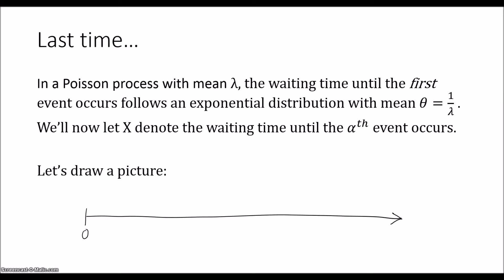Now we'll let X denote the waiting time until the αth event occurs. So let's draw a picture. We've got our timeline here. We can see the first event occurred, the second, the third, and so on. We have events that occurred in time.